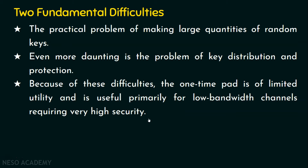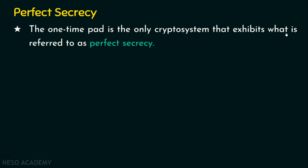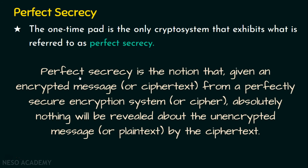Since the one-time pad offers the highest level of security, we say it offers perfect secrecy. The one-time pad is the only cryptosystem that exhibits what is referred to as perfect secrecy. Perfect secrecy is the notion that, given an encrypted message or ciphertext from a perfectly secure encryption scheme, absolutely nothing will be revealed about the unencrypted message or plaintext by the ciphertext. Since nothing is revealed about the plaintext from the ciphertext in one-time pad, we confirm that it exhibits perfect secrecy.